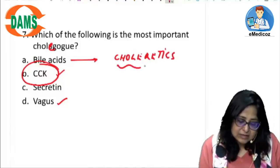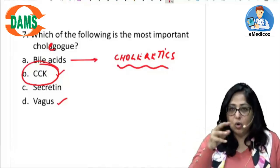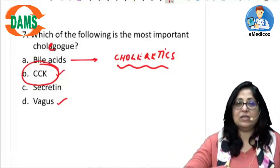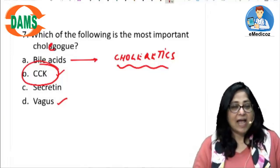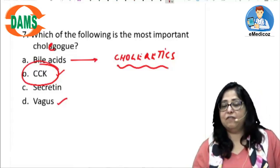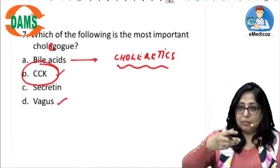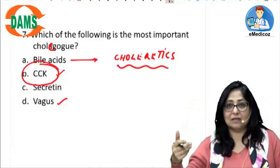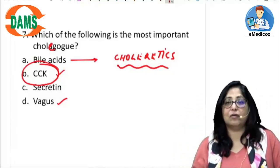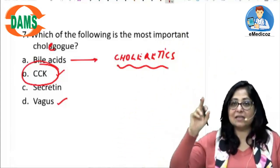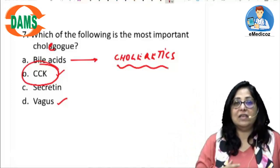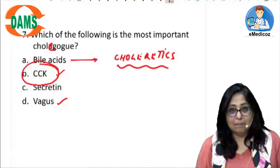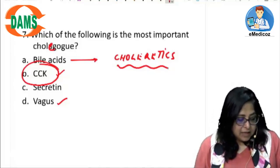Bile acids are choleretics. Choleretics are substances which increase the synthesis of bile and therefore increase its secretion. A cholagogue causes gallbladder contraction and therefore increases the secretion of bile, while a choleretic increases the synthesis and therefore the secretion. Bile acids are very important choleretics — 95% of bile acids are reabsorbed: 90% in the distal ileum and 5% in the colon. This enterohepatic circulation means bile acids cause the synthesis of more bile acids.